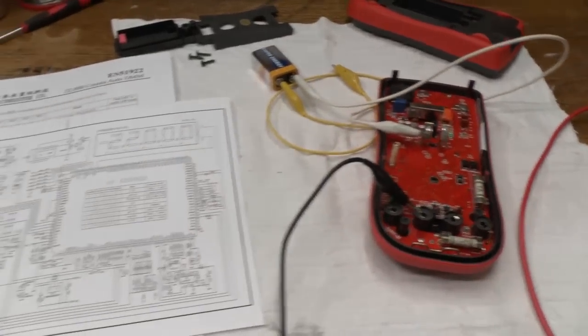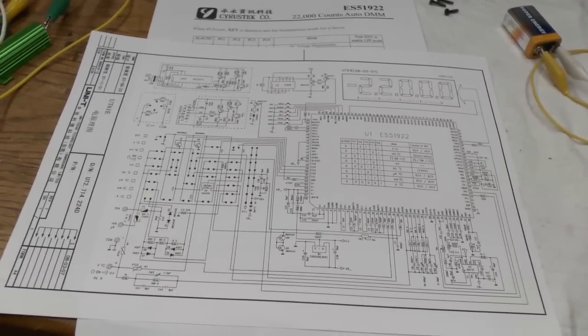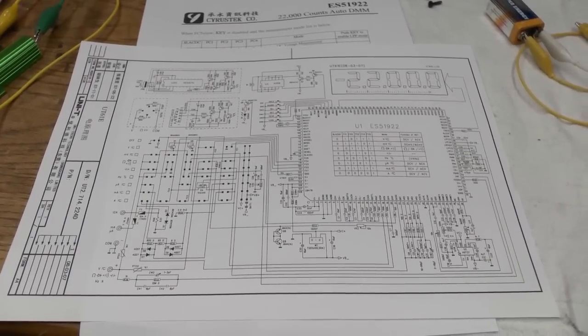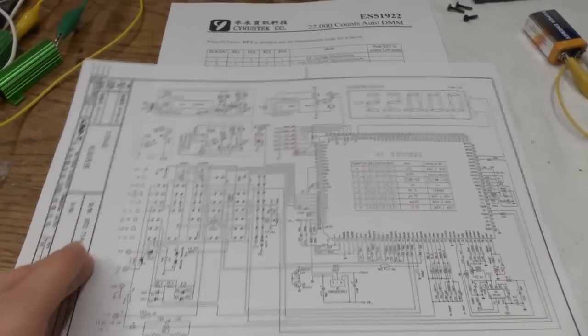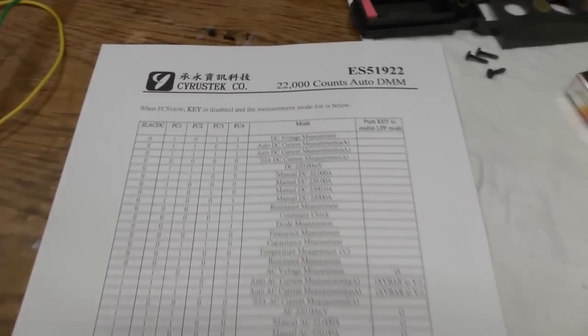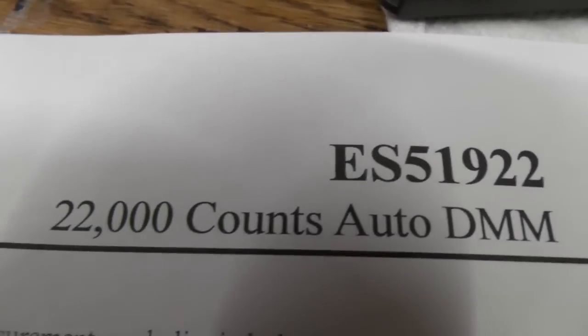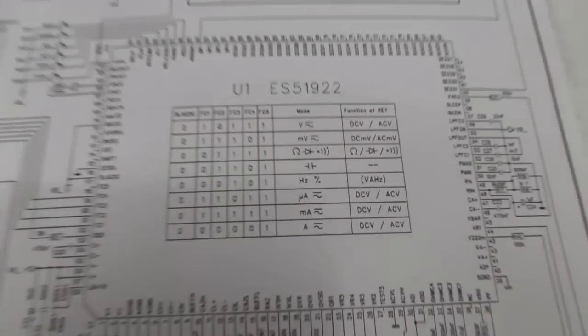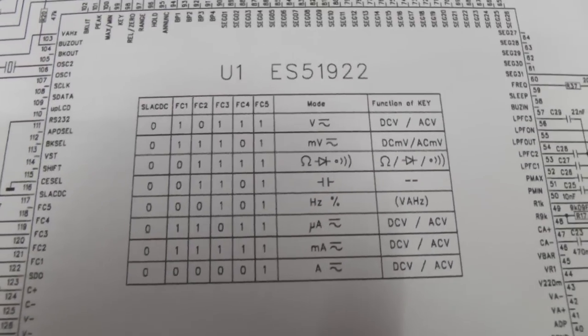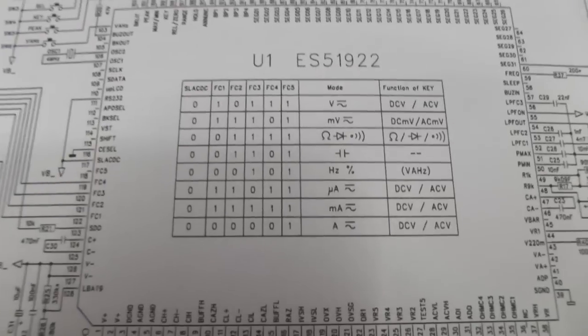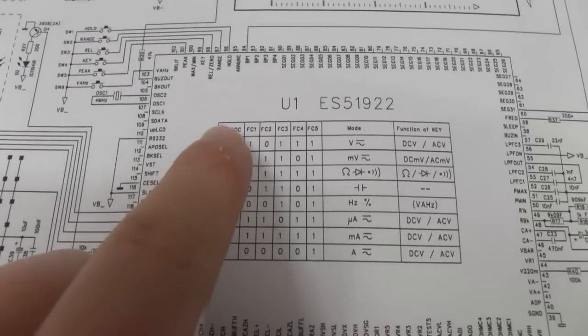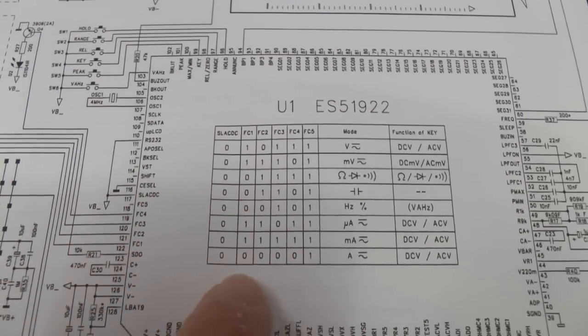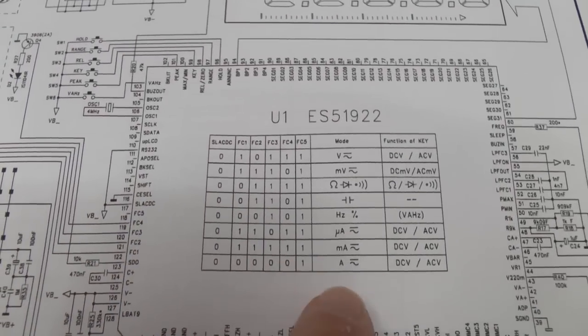I got into contact with another guy over email and he sent me the schematic diagram of the meter as well as a link to the full datasheet of the IC that the meter uses. I had a look at the function table and compared the results I was getting in the different modes to what it's supposed to do.